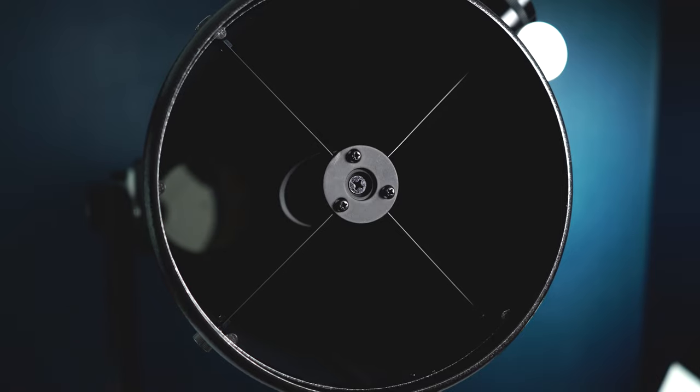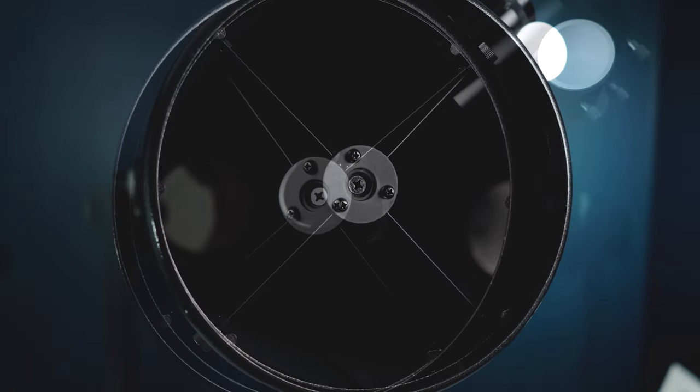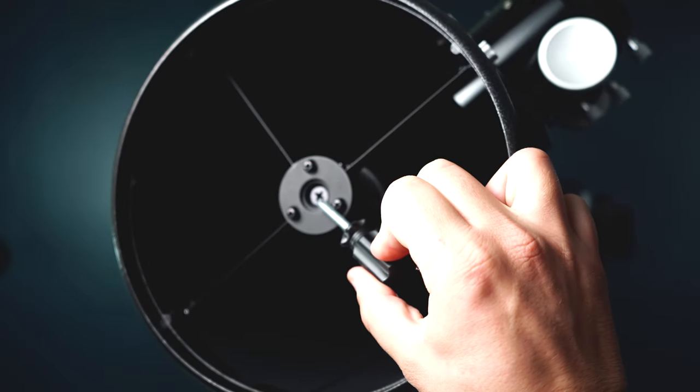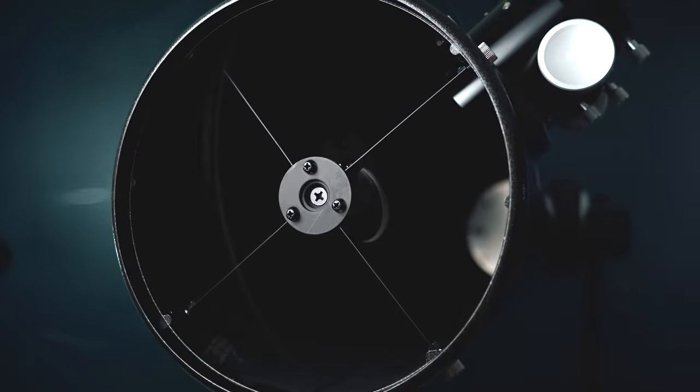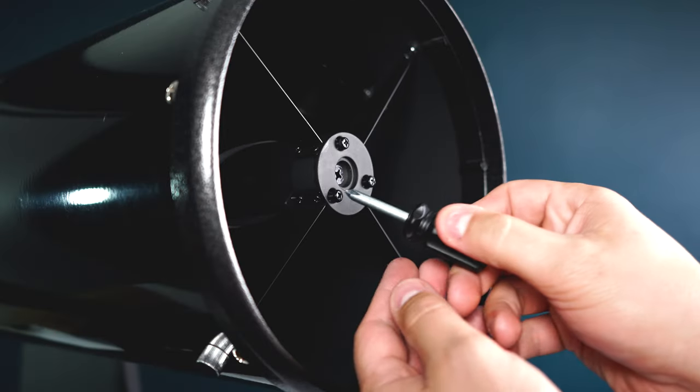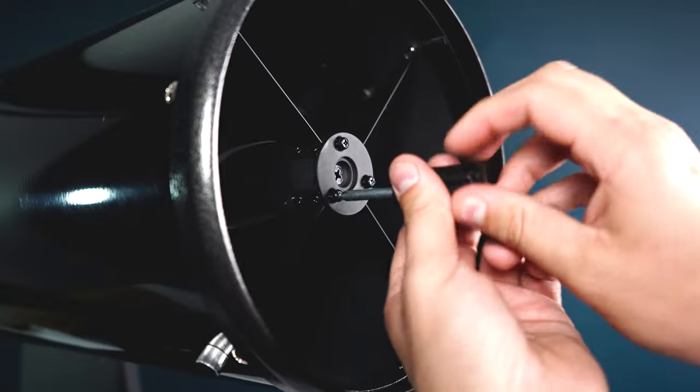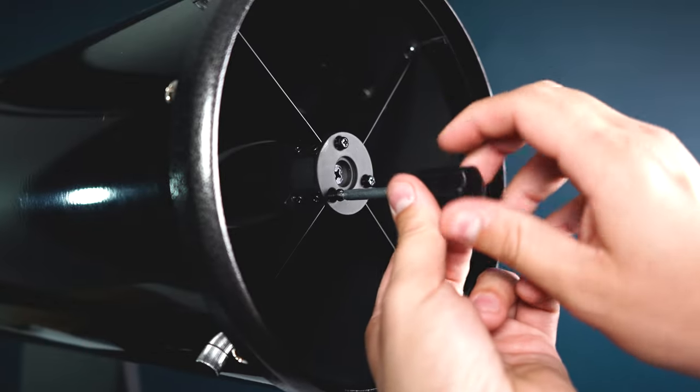First, you want to place the scope in a horizontal position to prevent any primary mirror damage. You'll find four screws. Now you want to make sure that you do not touch that central screw as it's going to affect the position of the mirror itself. When installing the collimation knobs, you want to remove one screw at a time and then insert a collimation screw in its place.